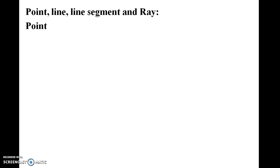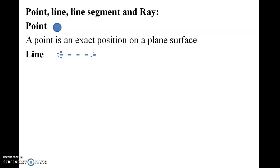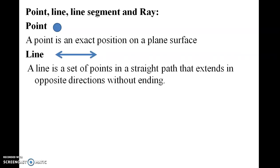What is a point? A point is an exact position on a plane surface. Next one is line. A line is a set of points in a straight path that extends in opposite directions without ending.